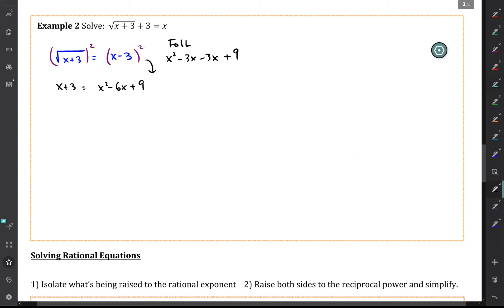So if we move the x and the 3 over to the other side, we'll get a quadratic equation in its usual form. So it's x squared minus 6x plus 9 minus x minus 3. So we subtracted the x and the 3 over to the other side. And now we just group like terms. We'll get 0 equals x squared minus 7x plus 6.